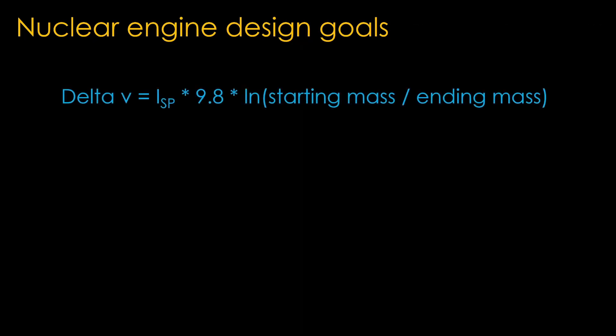Delta v is a measurement of the useful work we can get out of a rocket. It's defined as the specific impulse times 9.8 times the natural logarithm of the starting mass divided by the ending mass.